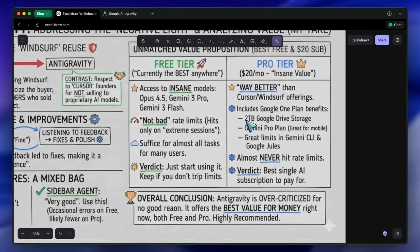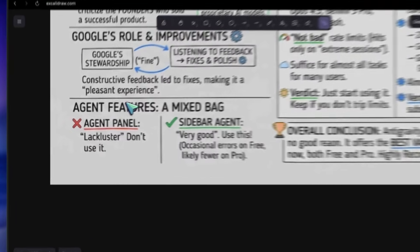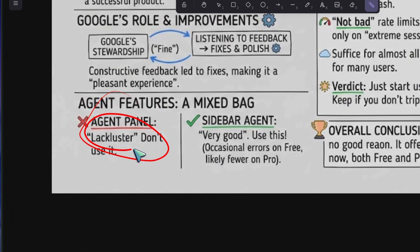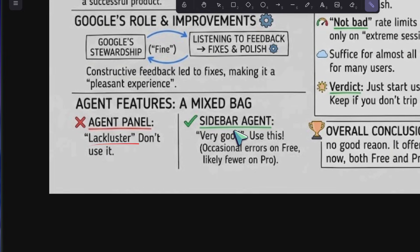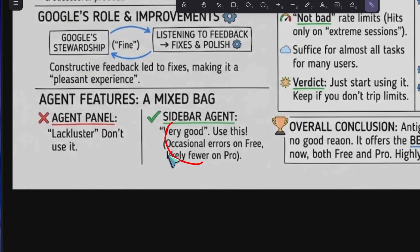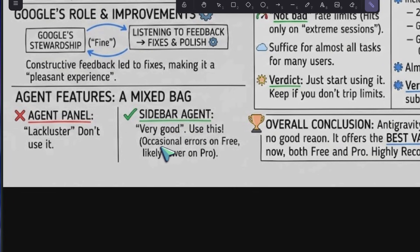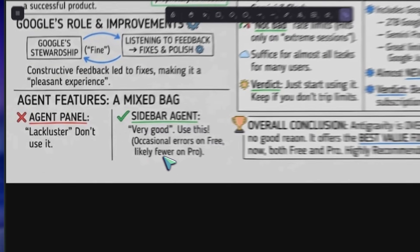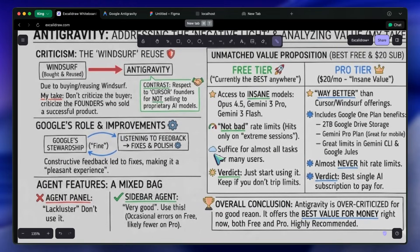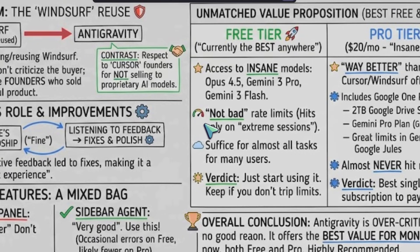As for the talk about the agent panel, I think the agent panel is really lackluster, and I wouldn't tell you to use that at all. But if you just use the sidebar agent, then it's really very good. I do get a bit of agent error sometimes, but it's free, and I can't really complain. On the paid plans, you probably won't even see them. I think anti-gravity's both pro and free plans are really the best value for money right now.